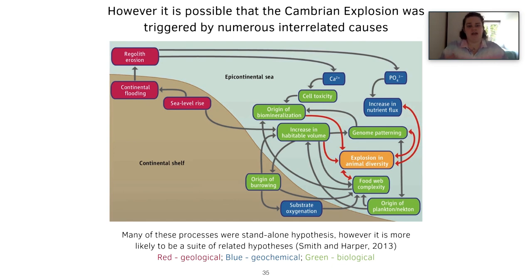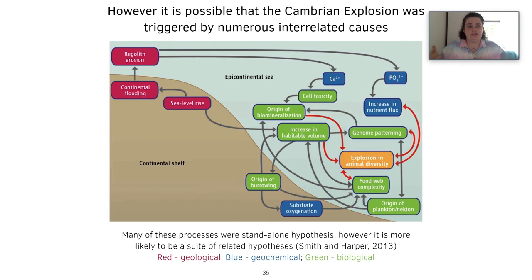The main take-home from all the triggers and causes is that the Cambrian explosion was likely triggered by numerous interrelated causes, as shown in this flow diagram. The evolutionary, ecological, and environmental hypotheses as standalone explanations could all have acted together at the same time, which would have led to the Cambrian explosion.